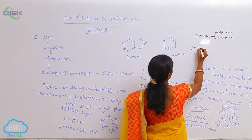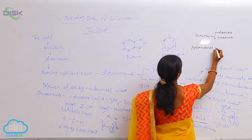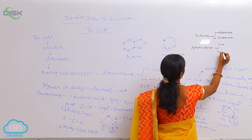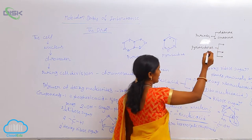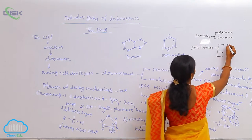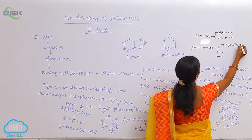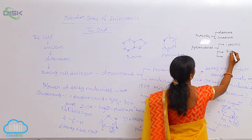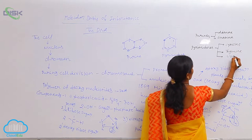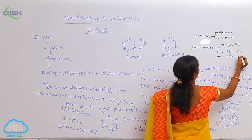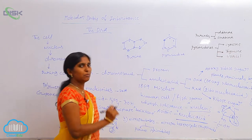Pyrimidines — here there are three types of pyrimidines, but two are present in RNA and two are present in DNA. Those are cytosine, thymine, and uracil. These are the purines and the pyrimidines.